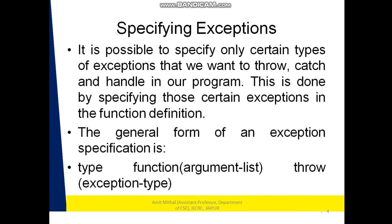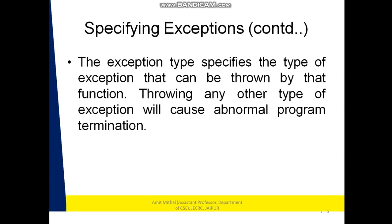The next concept is specifying exceptions. It is possible to specify only certain types of exceptions that we want to throw, catch, and handle in our program. This is done by specifying those types in the function definition. The general form is: type function(argument list) throw(exception type). The exception type specifies what can be thrown; throwing any other type will cause abnormal program termination.